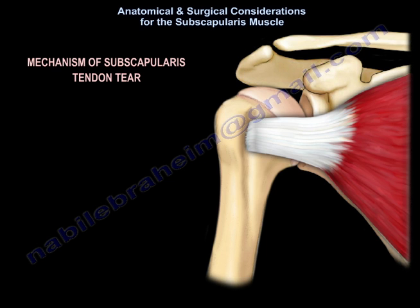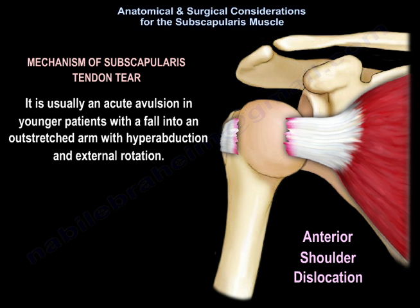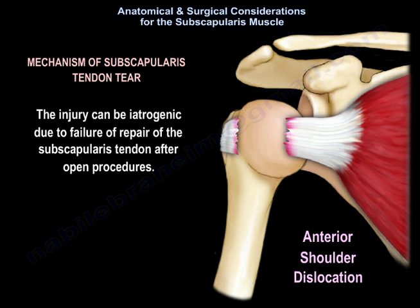Mechanism of subscapularis tendon tear: It is usually an acute avulsion in younger patients with a fall onto an outstretched arm with hyperabduction and external rotation. The presentation is usually anterior shoulder pain following a forcible external rotation injury. The injury can also be iatrogenic due to failure of repair of the subscapularis tendon after open procedures.